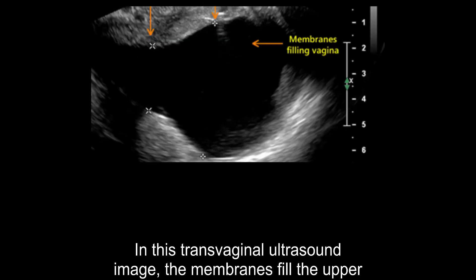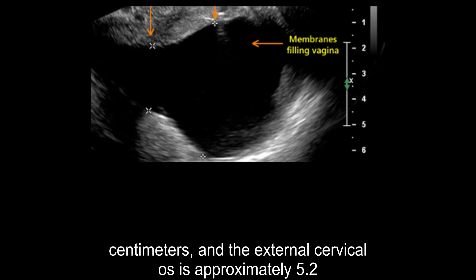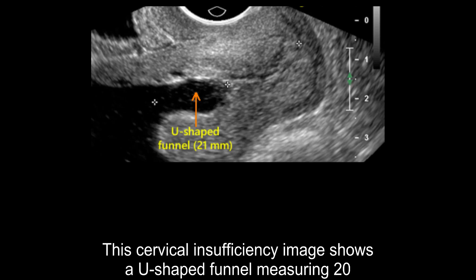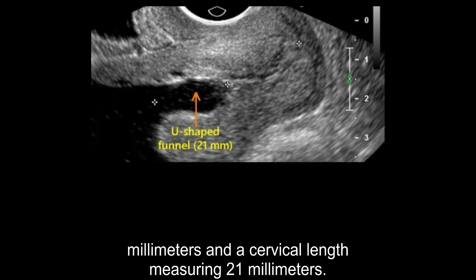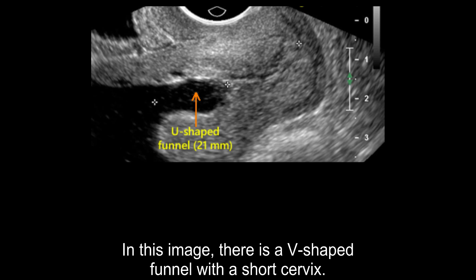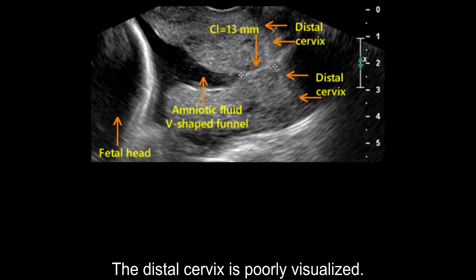In this transvaginal ultrasound image, the membranes fill the upper vagina. The internal cervical os dilation is approximately 2.5 cm, and the external cervical os dilation is approximately 5.2 cm. This cervical insufficiency image shows a U-shaped funnel measuring 20 mm and a cervical length measuring 21 mm. In another image, there is a V-shaped funnel with a short cervix, and the distal cervix is poorly visualized.